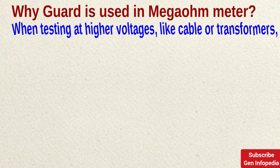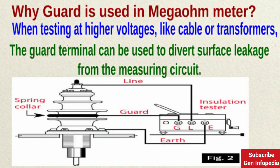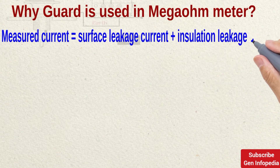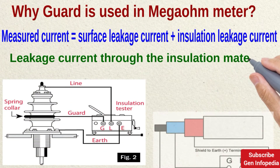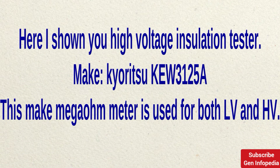Everyone may have a doubt about why the guard terminal is used. When testing at higher voltages — such as with cables or transformers — the guard terminal diverts surface leakage current away from the measuring circuit. For example, if you are performing a primary-to-ground test on a transformer, you need to guard the secondary windings. This guard connection provides a return path for surface leakage current. Without connecting the guard terminal on HV equipment, it creates errors. The measured current equals surface leakage current plus insulation leakage current.